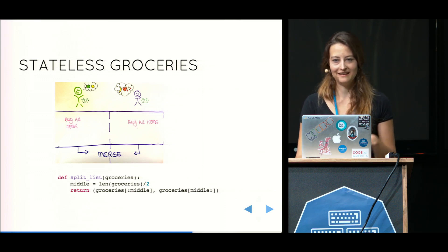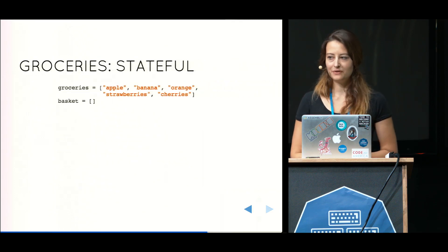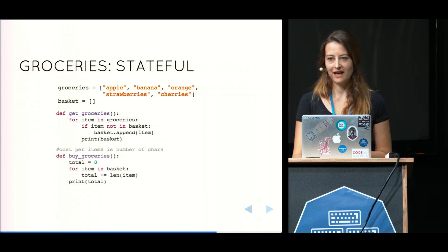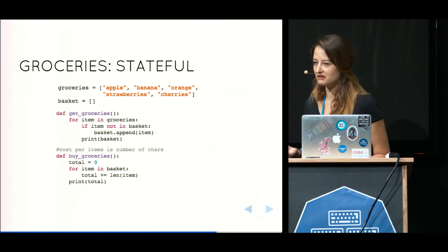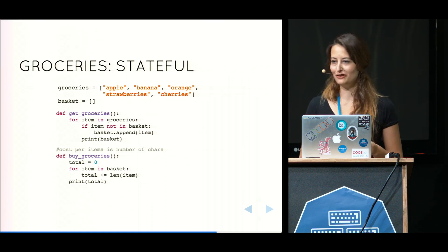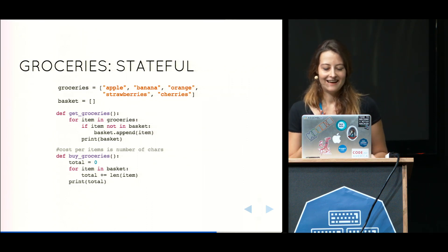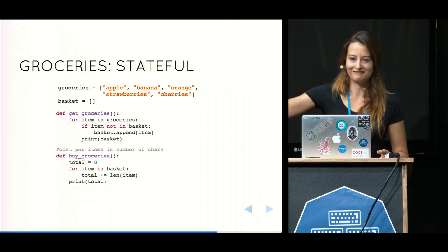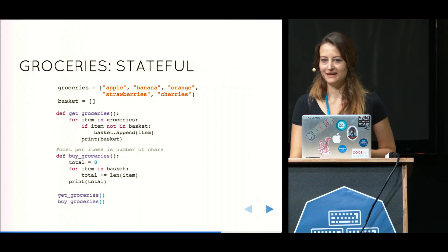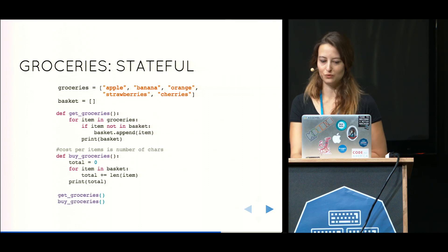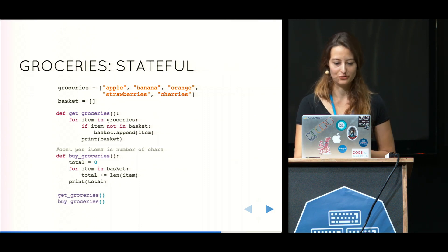To recap a little bit what the problem was all about, we had the groceries in the basket. We had the get groceries function. Just to make it a little bit more fun, I added a buy groceries function. Because we don't really have a price, the price will be the number of characters in every string in the grocery list. I'm pretty sure your local supermarket will not agree with this. So we have to buy groceries and we will just add up all those characters and then we'll have a total sum and that sum equals buy. And then finally, this is how we then call the functions one after another in a very stateful world.